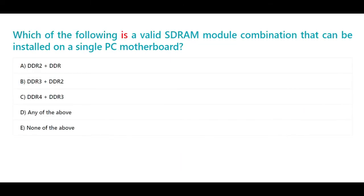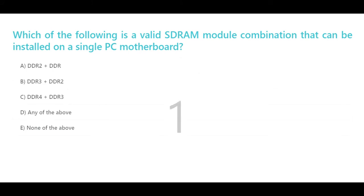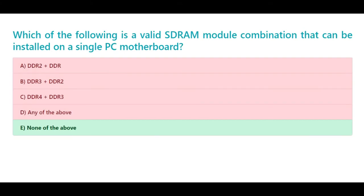Which of the following is a valid SDRAM module combination that can be installed on a single PC motherboard? A. DDR2 + DDR. B. DDR3 + DDR2. C. DDR4 + DDR3. D. Any of the above. E. None of the above. The correct answer is E. None of the above.